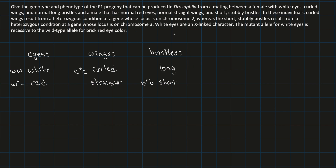Now let's build the female genotype. She has white eyes, so that's W W — and we need to note this is X-linked, so females carry two alleles. She has curled wings, so she's C⁺C. She has normal long bristles, meaning she's homozygous recessive for the bristle gene: little b, little b.